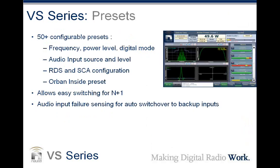Let's talk about presets because they're very powerful. You can have up to 50 sets of presets, and a preset is a combination of just about everything you can configure for the transmitter — starting with frequency, power level, digital mode, audio levels, audio loss settings, and all audio sources. We can use the preset to control the transmitter in a very complex way, always keeping audio flowing. We can set up audio loss chains and control the Orban processor presets as well within our preset.